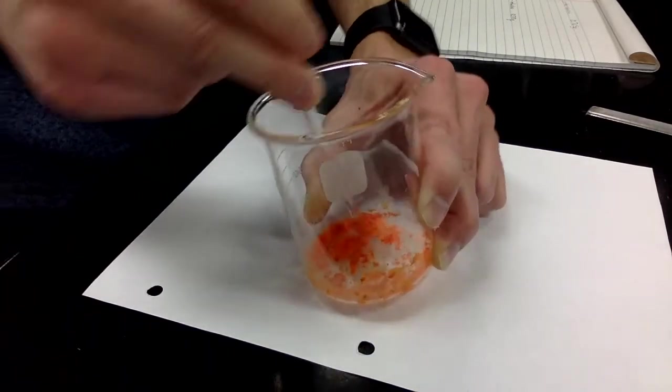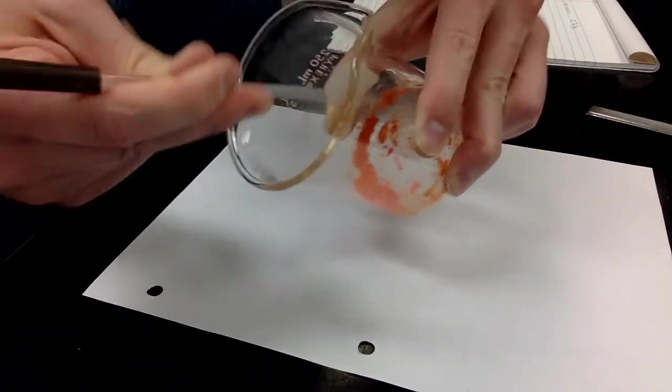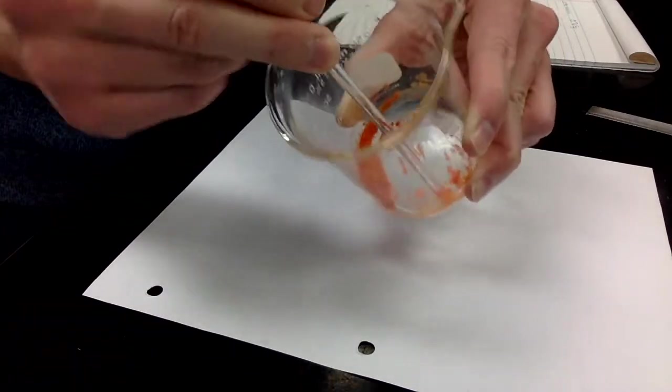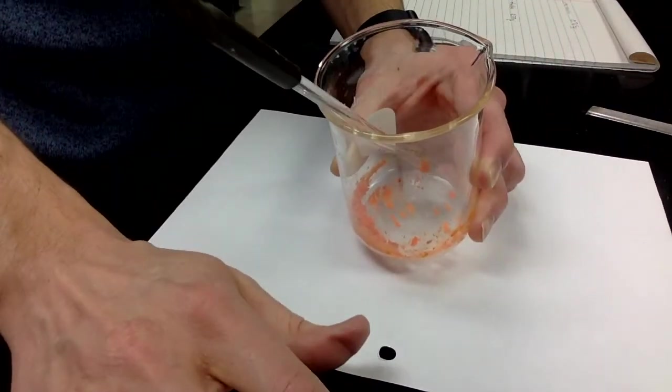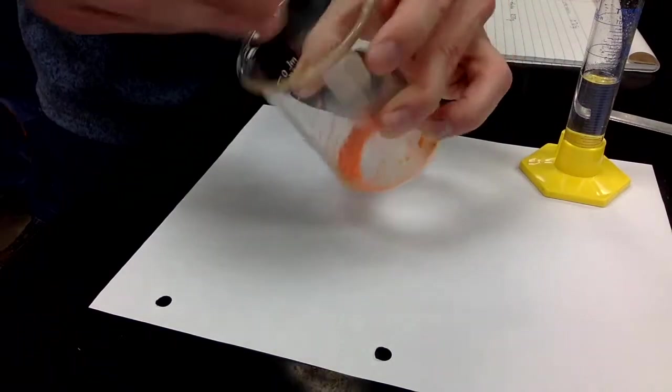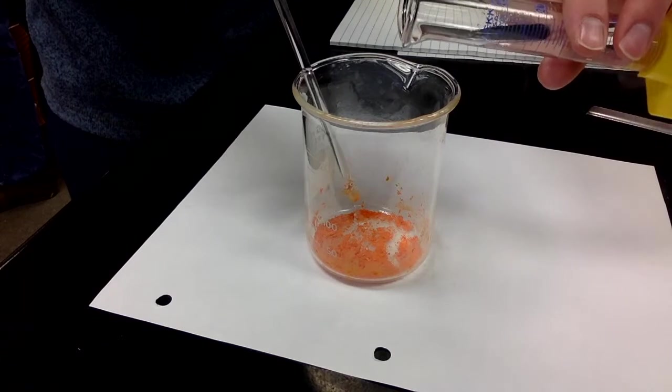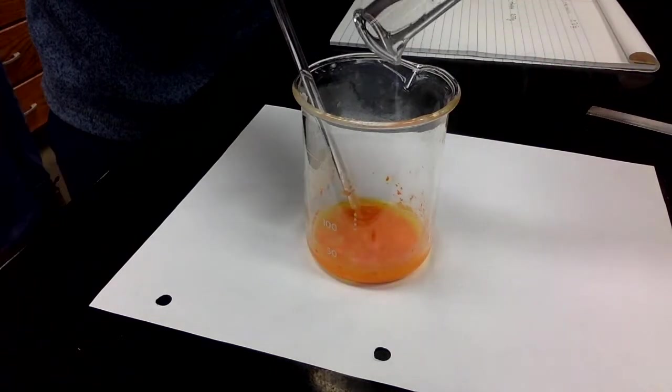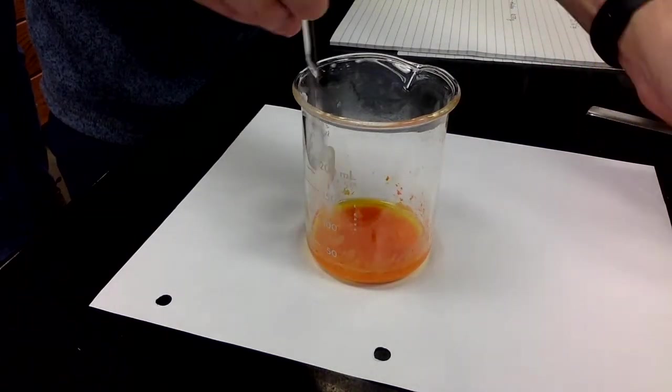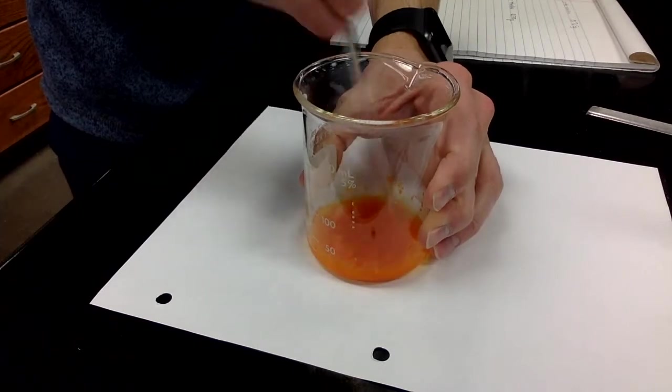But you can see it's really becoming a nice solid now, and we'll be back with you soon. So here we have the imine. It's nice and solid. You can see it's free-flowing, and now we're going to add our ethanol to that, and stir it to somewhat dissolve that solid, and then we're going to add our sodium borohydride.